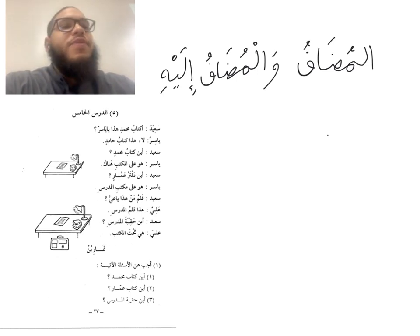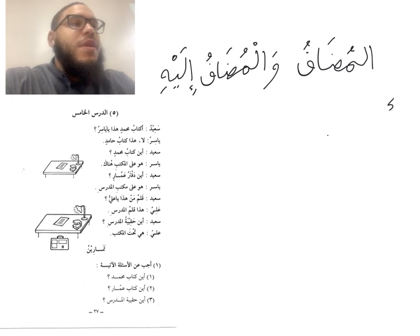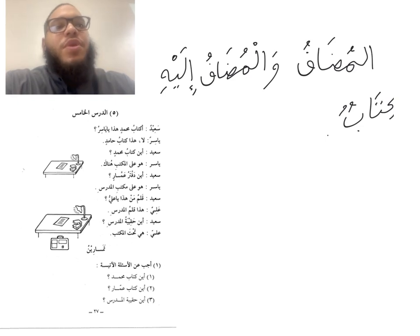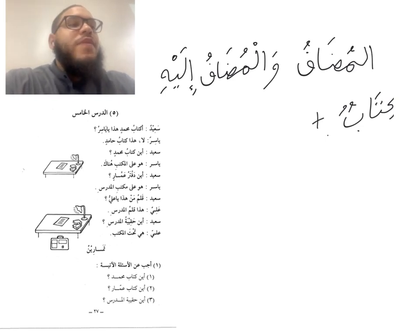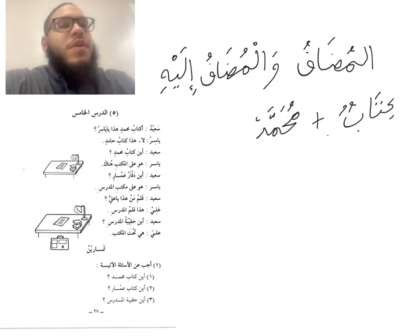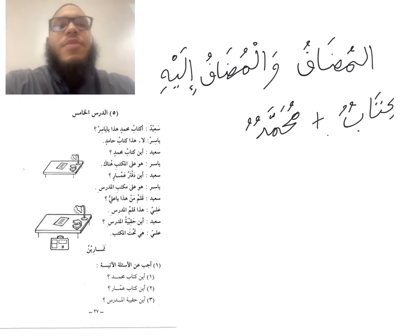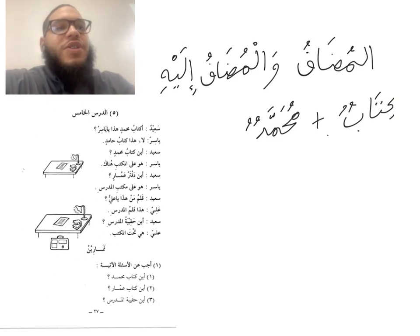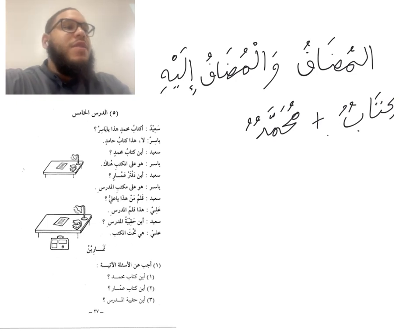If we take a noun, for example, Kitabun — this means 'a book' — and then we have Muhammadun. A book, and Muhammad. Now if we want to say something like 'Muhammad's book' in Arabic, we do this with a construction called the Mudaf and Mudaf ilayhi, and it looks something like this: Kitabun becomes Kitabu.